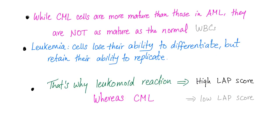One more time: CML cells are more mature than AML, yet they are not as mature as normal white blood cells. Because in leukemia, by definition, the cells lose their ability to differentiate but retain their ability to replicate. That's why leukomoid reaction will have a high LAP score — the cells are mature. CML has a low LAP score because the cells are less mature than normal. Left shifting.